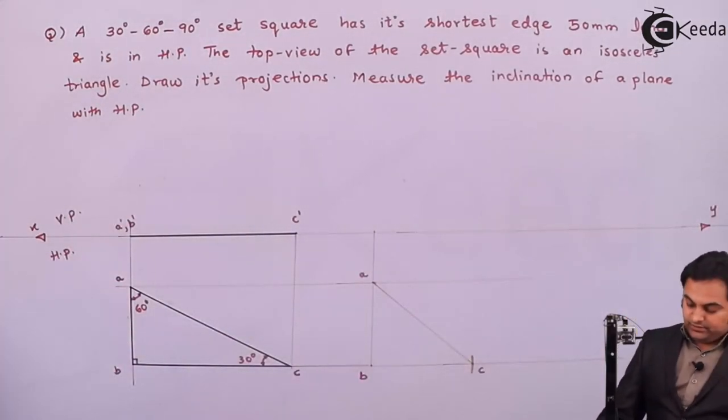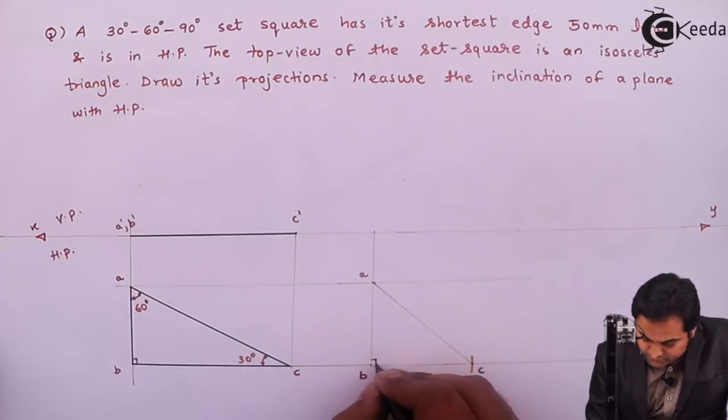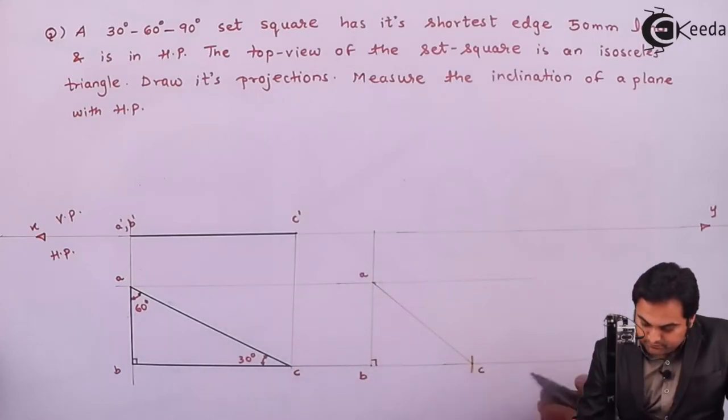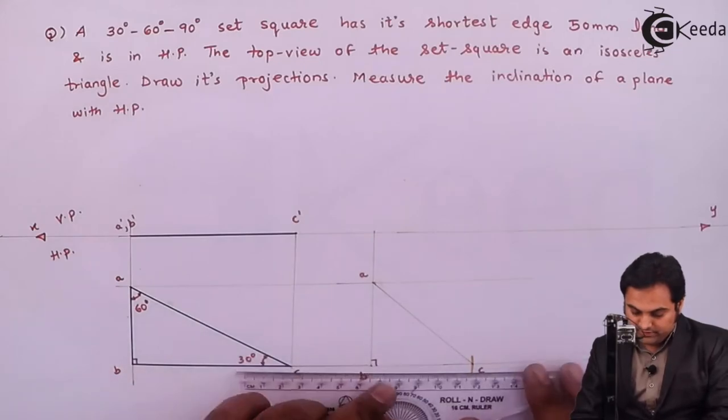So here, the isosceles triangle, we are getting ABC, in which the sides AB and BC are equal. So I'll make them dark.